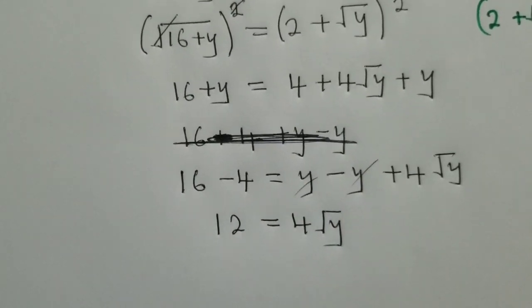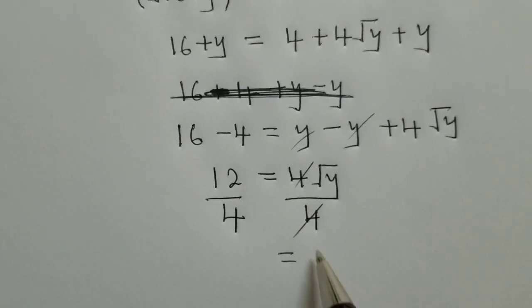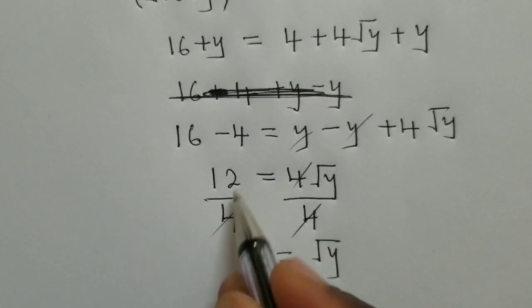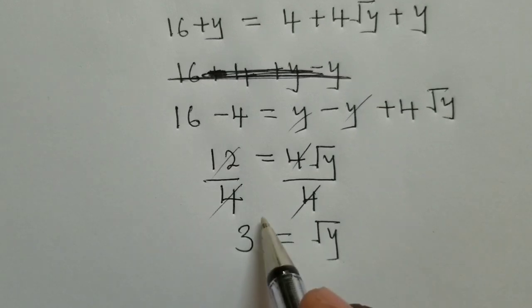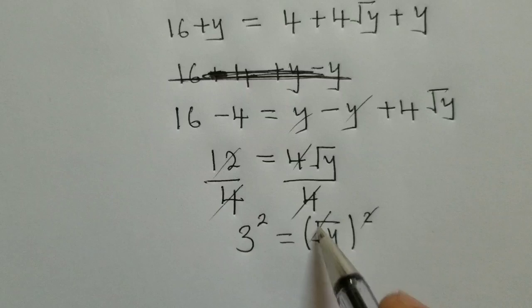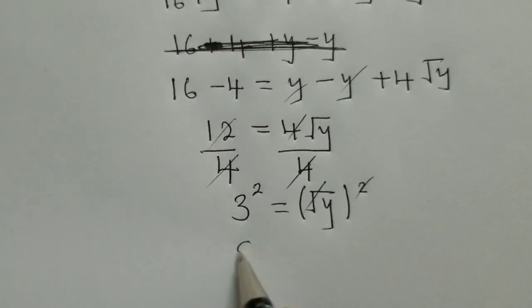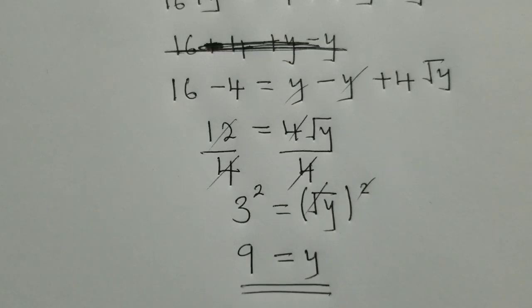This and this will go. We divide by 4, divide by 4. So you find that the root of y will be equal to 3. Now to solve for y, we apply a power 2 so that we get rid of this root here. And the value of y will be equal to 9.